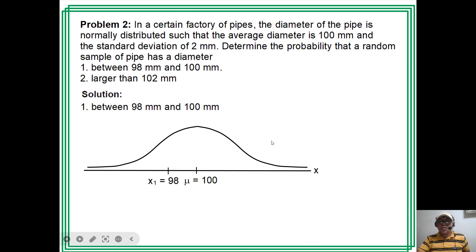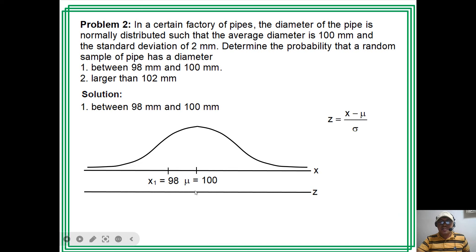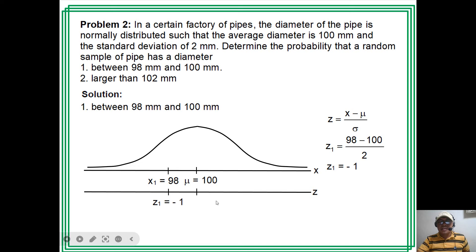In the calculation, we do not use the value of x directly. Instead, we convert x to a z-score using the formula: z = (x − mean) / standard deviation. If we convert x₁ = 98: z₁ = (98 − 100) / 2 = −1. This means x = 98 corresponds to one standard deviation below the mean, giving z = −1.